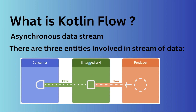Now consider a case where you want to create your own application using the MVVM design pattern. In that case, your repository will act as a producer, because whatever response is coming from the server in the form of a data stream will eventually get delivered to the view, which will act as a consumer. On the other side, if I'm performing some kind of click operation or generating some kind of event on the view, then that UI will act as a producer, and if that request is going to the view model or to the repository, then view model and repository will act as a consumer.